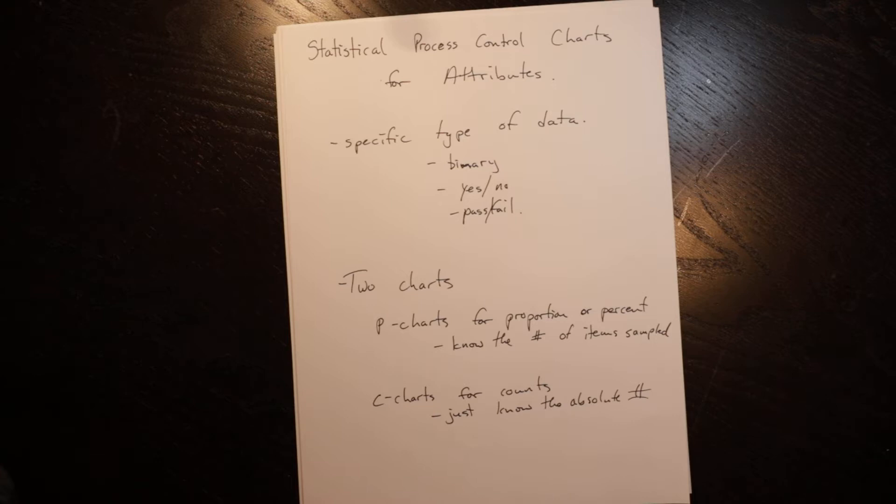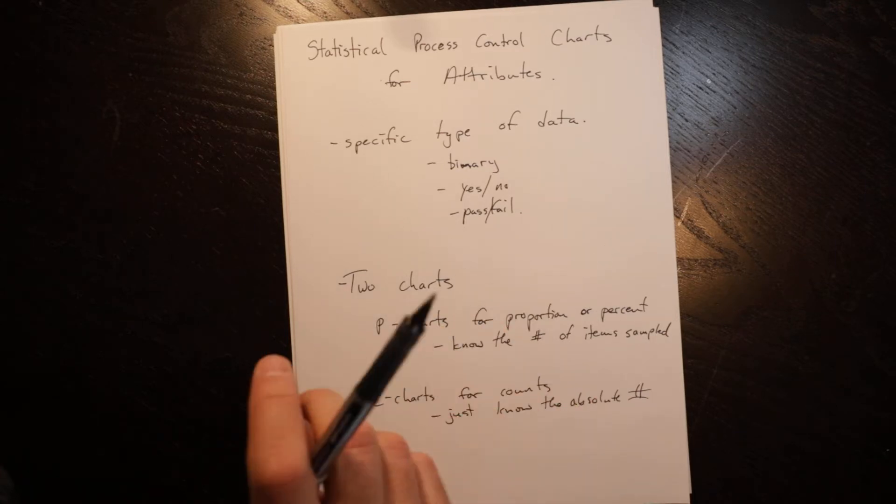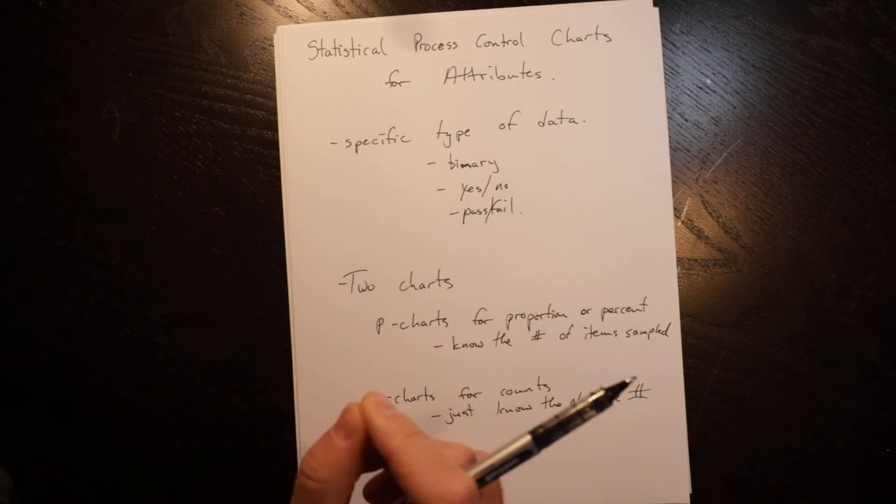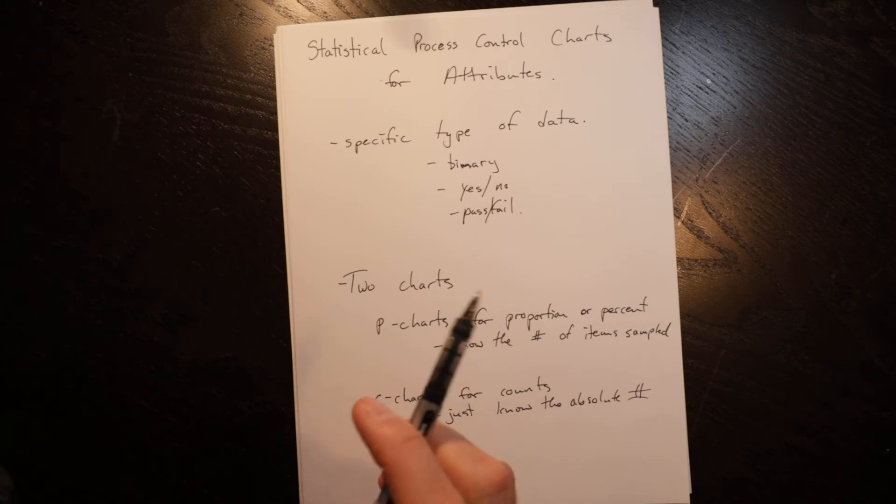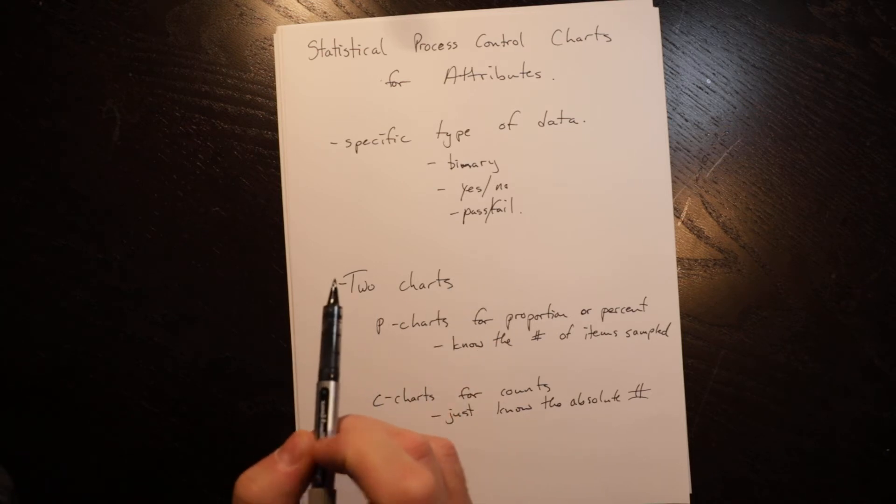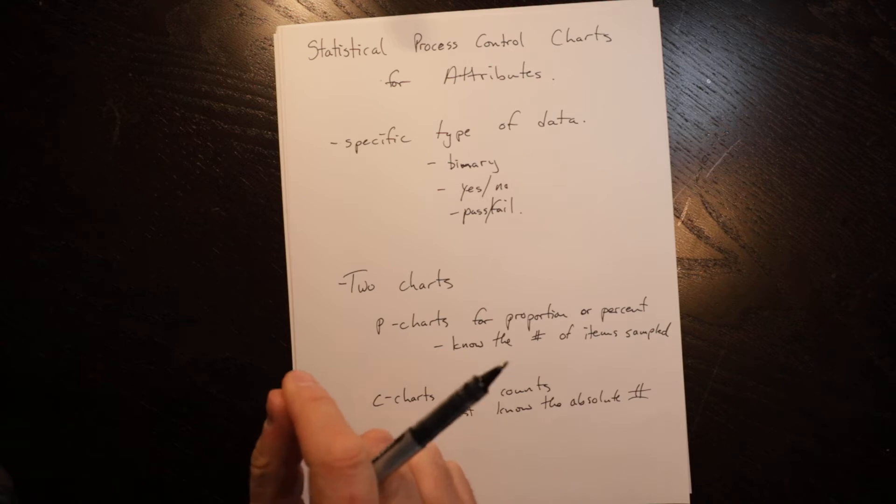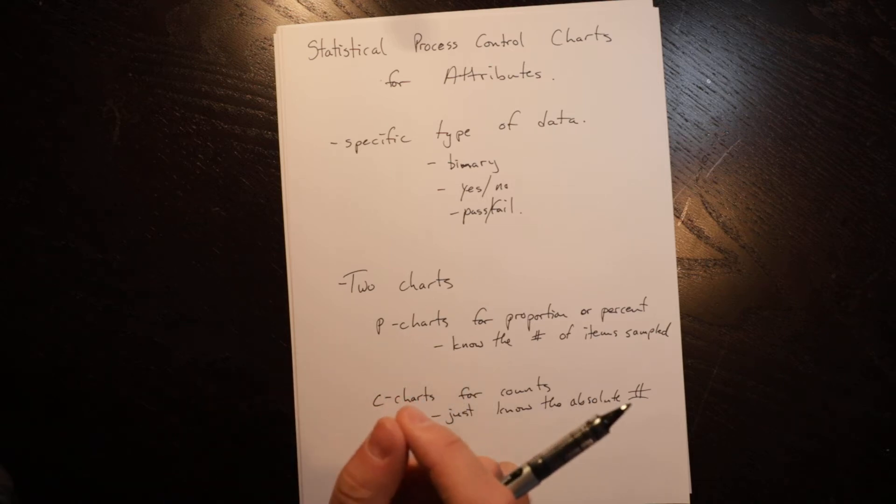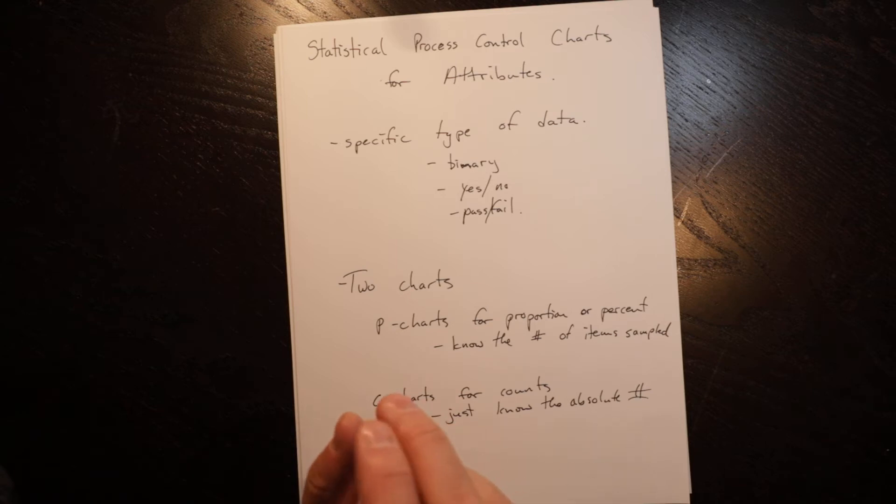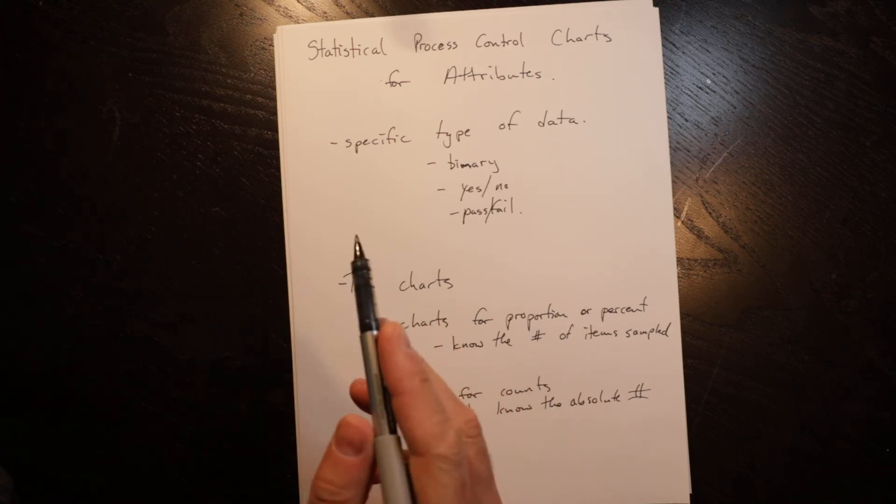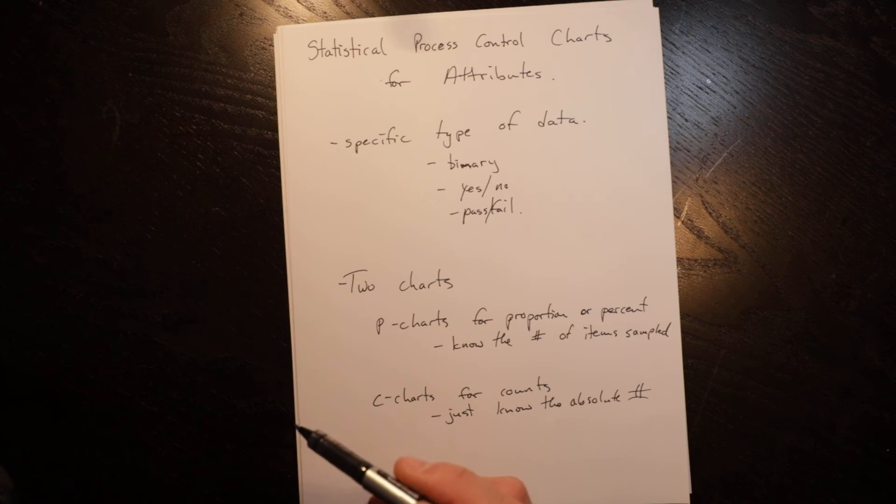Attributes are a specific kind of data. They are binary. If you have that kind of data then you would choose one of these charts. If you have something that is continuous data - height, weight, speed, width, things that there can be multiple values of it - there you have a variable and I encourage you to watch the video on statistical process control charts for variables.